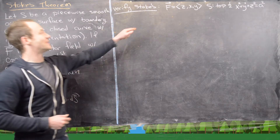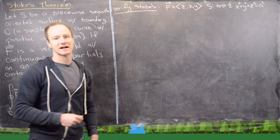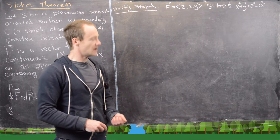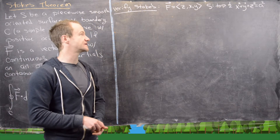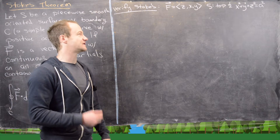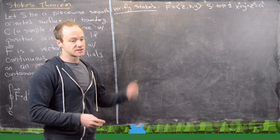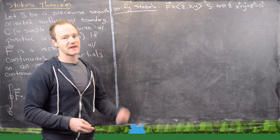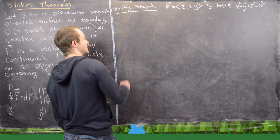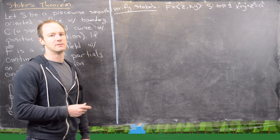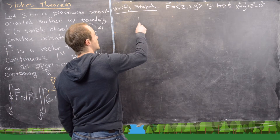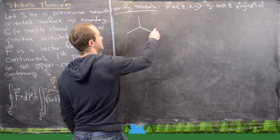For our example, we want to look at the vector field (Z, X, Y). The surface is the top half of X² + Y² + Z² = A², which is a sphere of radius A. We need to figure out what that bounding curve is and then parametrize everything. We'll do the surface integral first because that's the most involved, and then we'll do the line integral second.